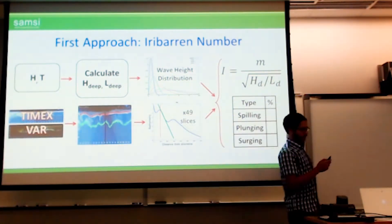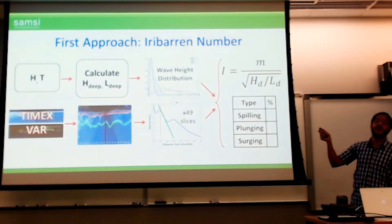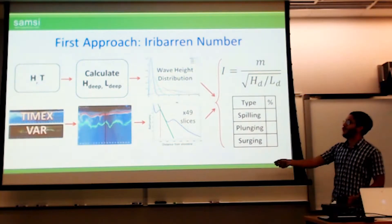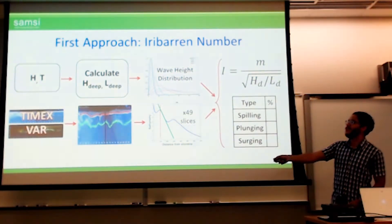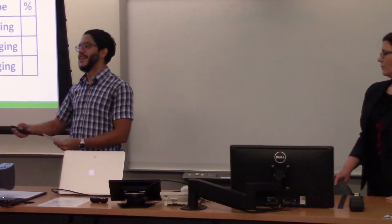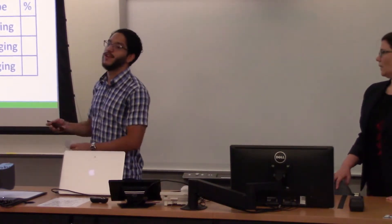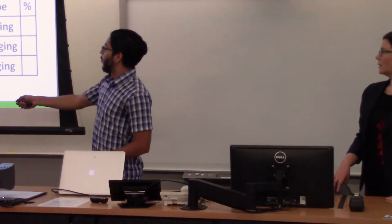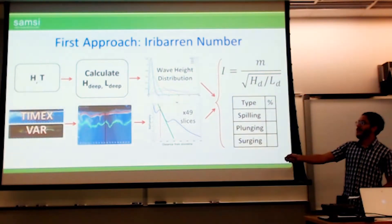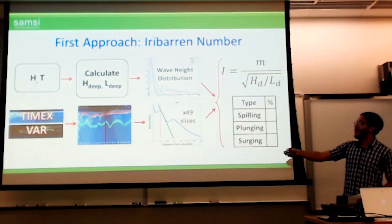What Riley just described allows us to calculate the denominator of the Iribarren number, but we still need to find a slope. To do this, we want to use the available imagery data — the Timex data and variance data. The Timex is just the average of several snapshots over roughly 20 minutes, giving average wave-breaking behavior; the variance is the statistical variance of that data. Once we have that information, we apply an image processing method to extract where the coastline is and where the wave breaking points are — this can be pretty much automated.